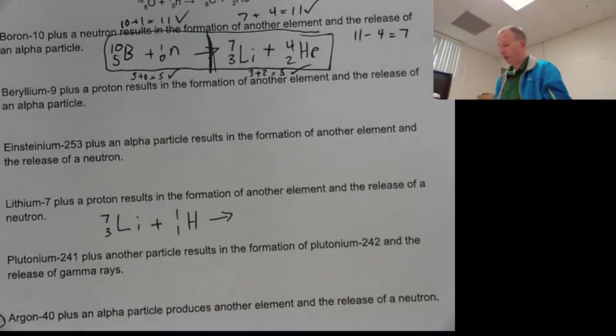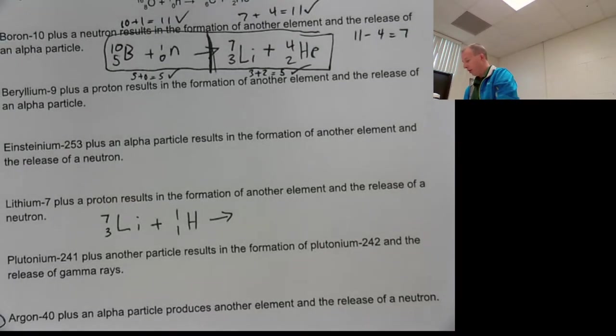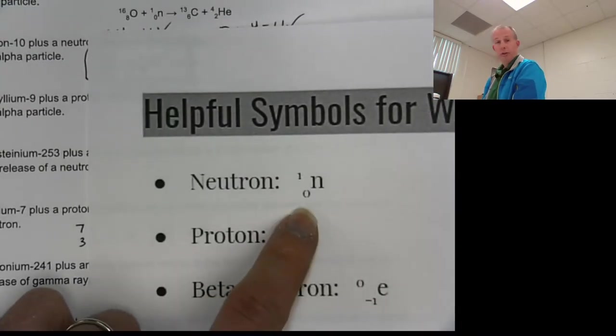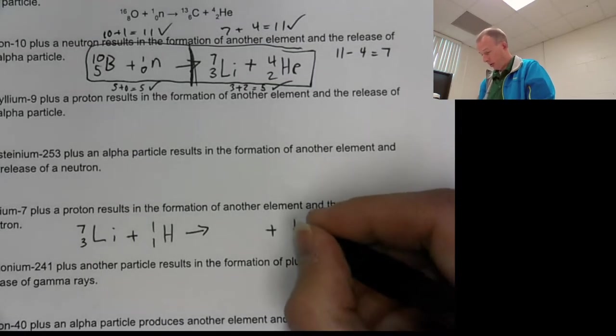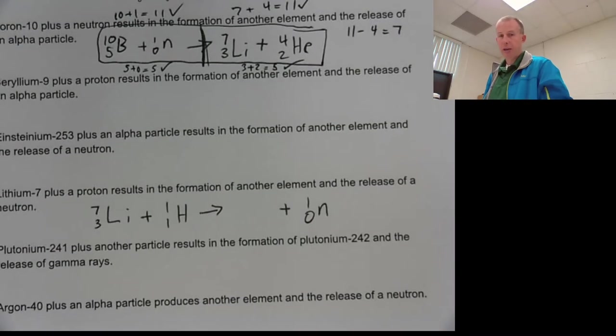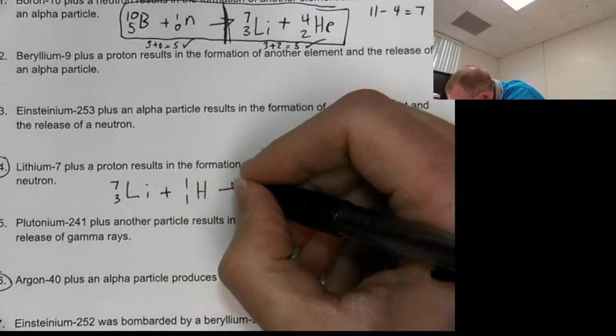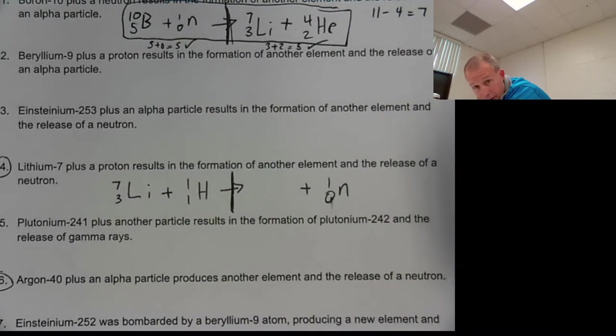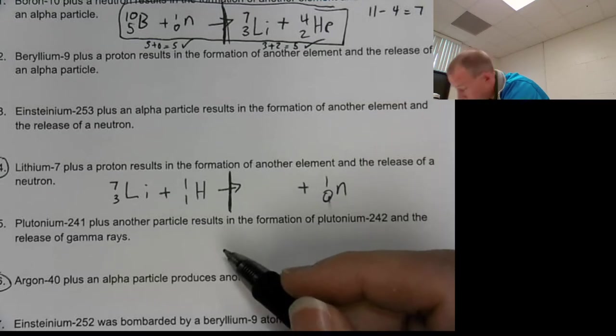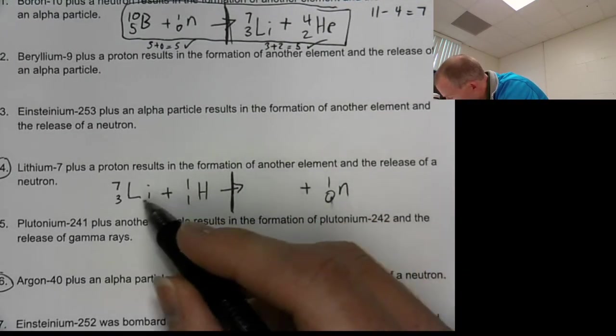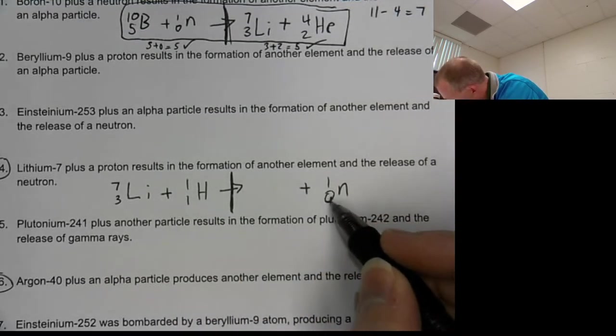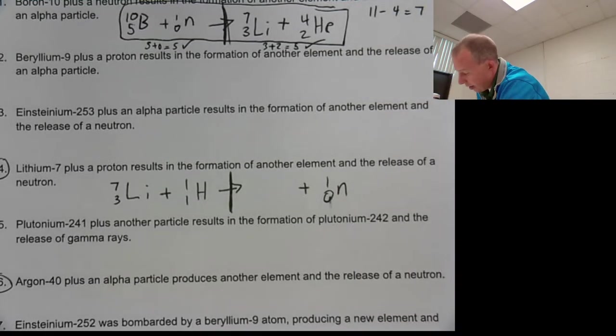It says it results in the formation of another element and the release of a neutron. So we know that we're going to have an element here, but then we also are going to have a neutron. Remember a neutron looks something like that. So we've got a one, a zero, and an N. And the goal again is that this is all got to match up. It's got to be balanced and add up. So the arrow is our dividing line. As always, I like to actually draw that in there. I think it helps people remember.